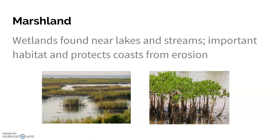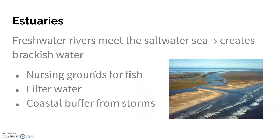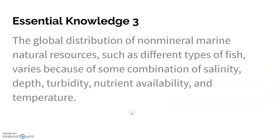Marshlands are wetlands — we're very familiar with these in Florida. They're found near lakes and streams, provide important habitat, and protect coasts from erosion by acting as a buffer zone. Estuaries are where freshwater rivers meet saltwater, creating brackish water — half salt, half fresh. This condition makes estuaries a nursing ground for many fish, including fish we eat. They also filter water and provide a coastal buffer from storms.